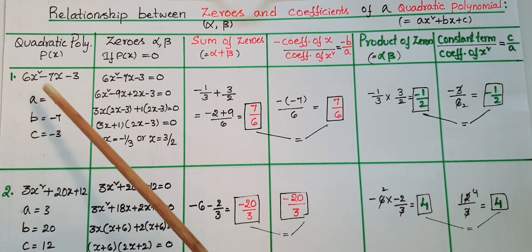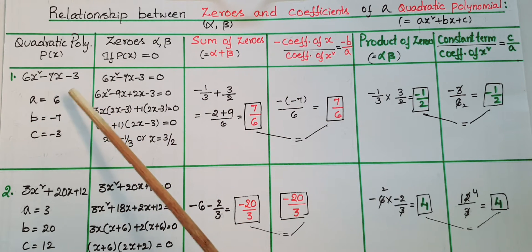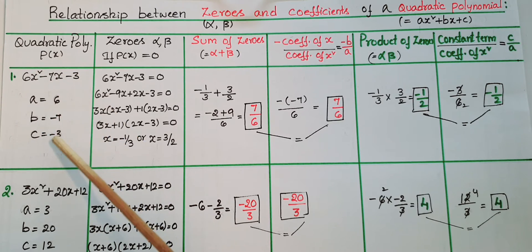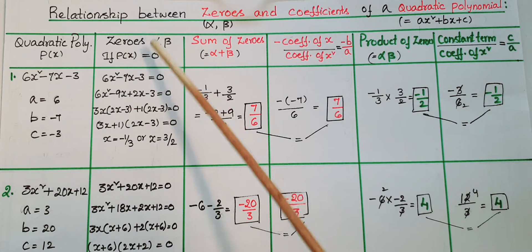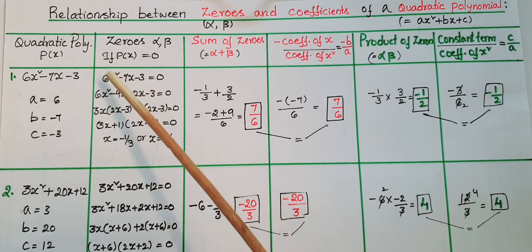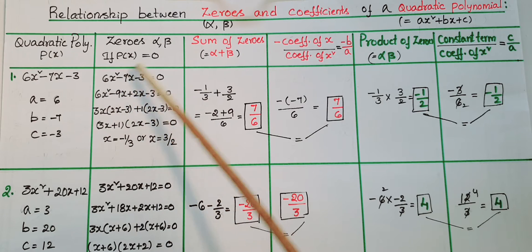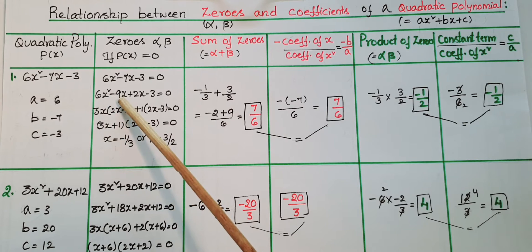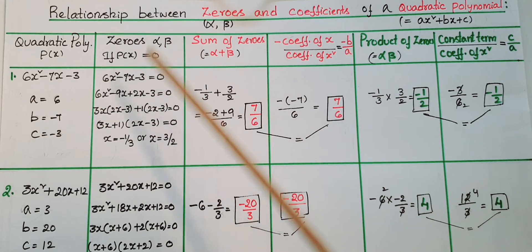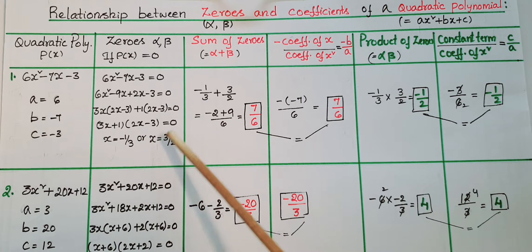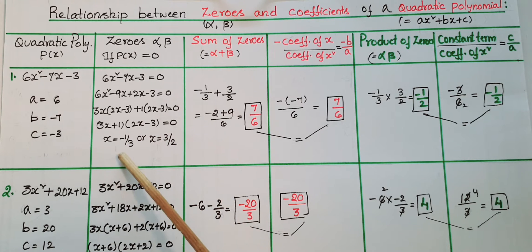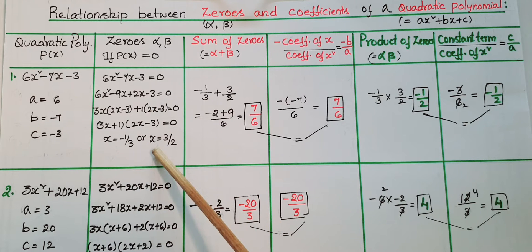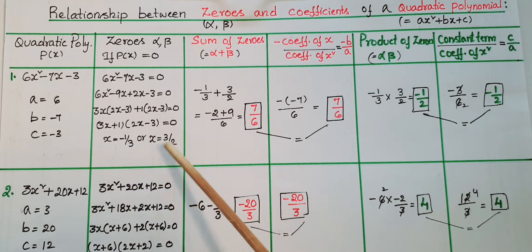For example, take 6x² - 7x - 3. This is a quadratic polynomial where a = 6, b = -7, and c = -3. We get zeros alpha and beta when p(x) = 0. So 6x² - 7x - 3 = 0. Splitting the middle term: 6x² - 9x + 2x - 3 = 0, giving x = -1/3 or x = 3/2. So alpha = -1/3 and beta = 3/2.